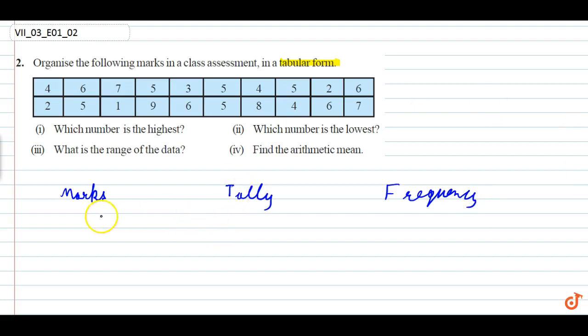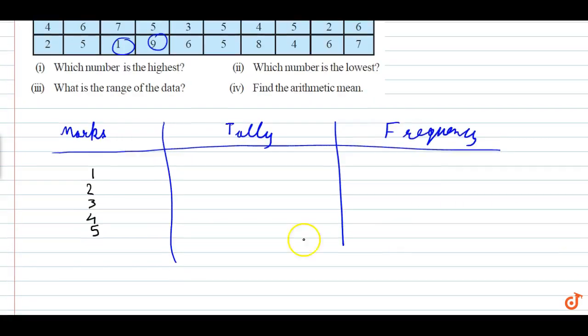For the marks column, the lowest mark is one and the highest is nine. So we list all the marks: one, two, three, four, five, six, seven, eight, and nine.